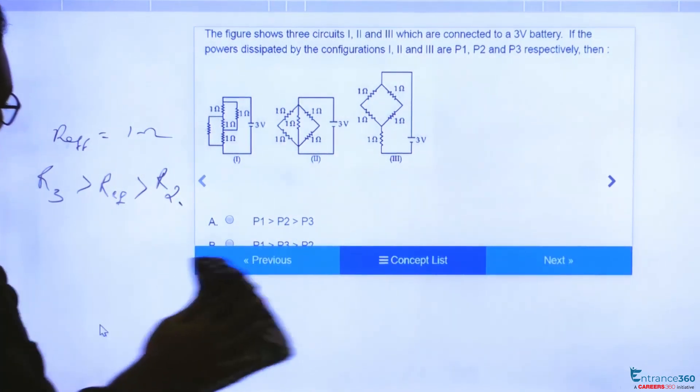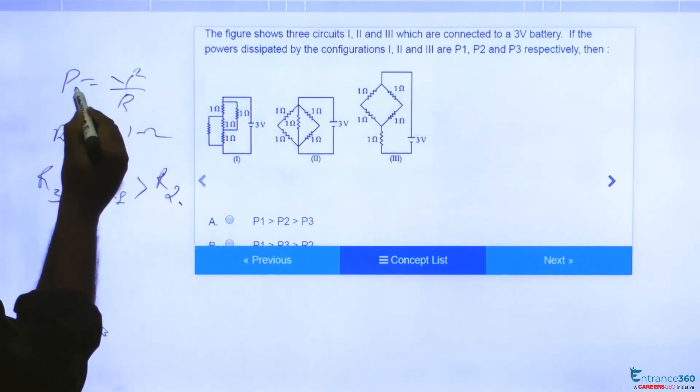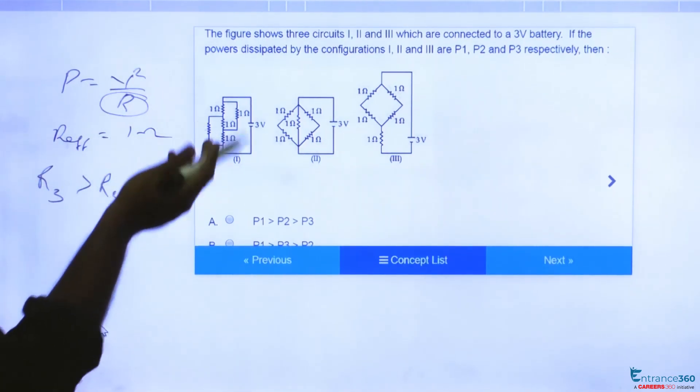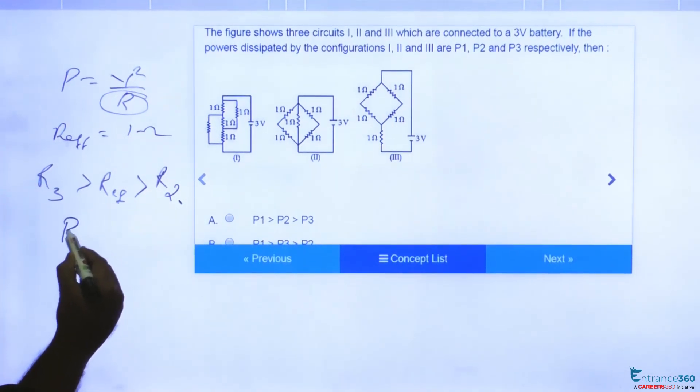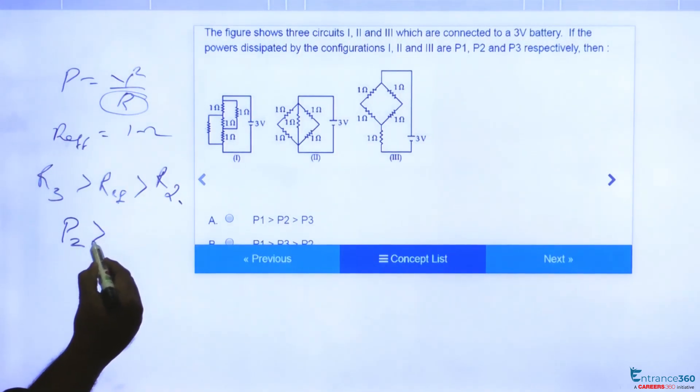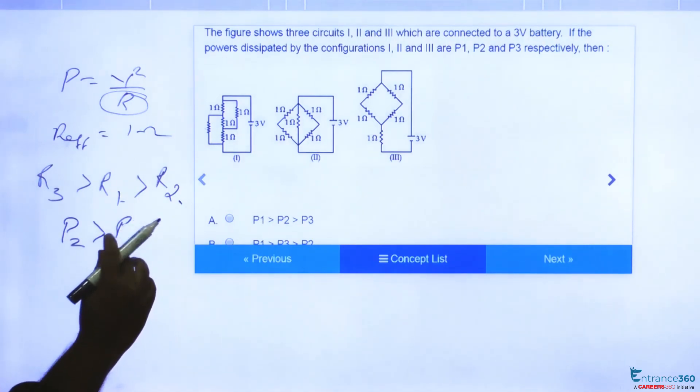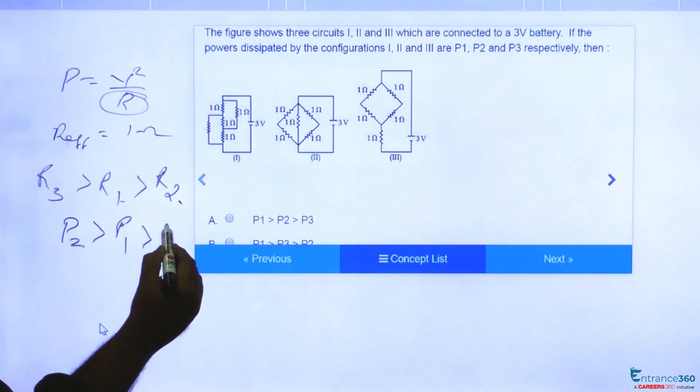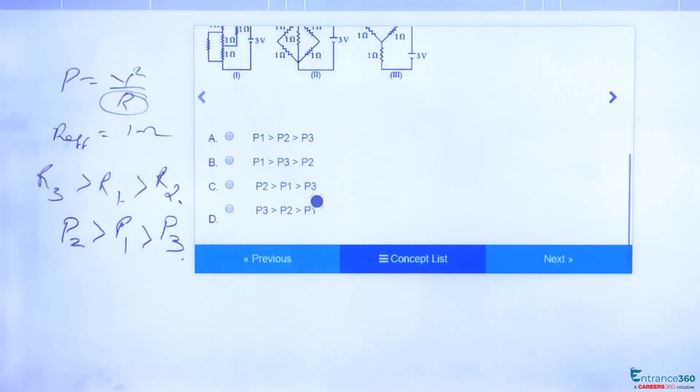So as we told, P is equal to V squared by R, so inversely proportional to R. Voltage is same for all the circuits, so we can write P2 will be greater than P1, will be greater than P3. So which is our option C. C is the right answer.